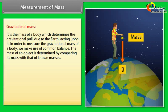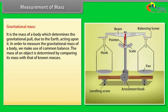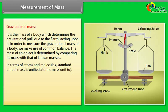Gravitational mass: it is the mass of a body which determines the gravitational pull due to the earth acting upon it. In order to measure the gravitational mass of a body, we make use of common balance.